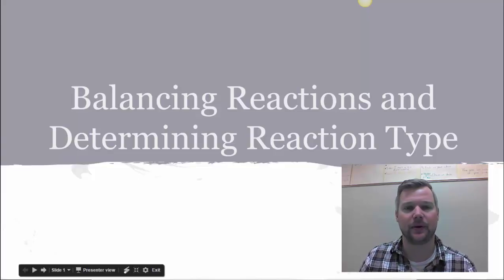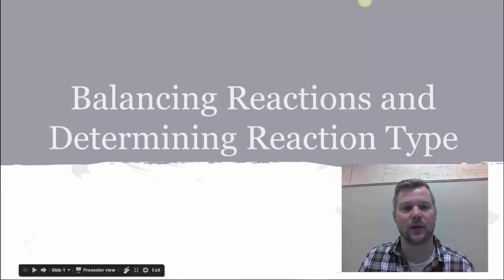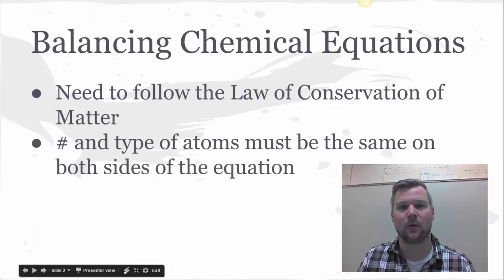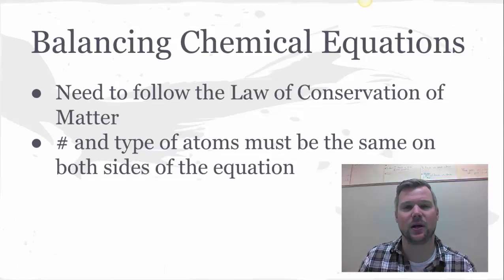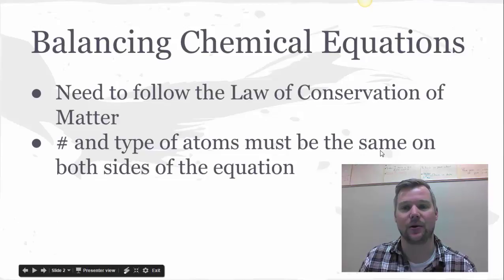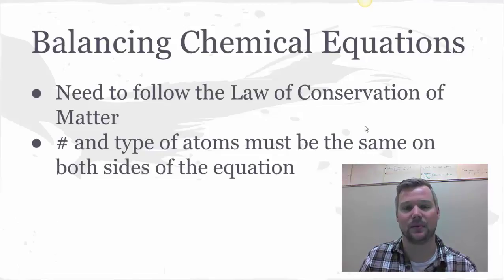Hi there, we're going to talk about balancing reactions and determining reaction type in today's quick video. Balancing chemical equations needs to be done in order to follow the law of conservation of mass or law of conservation of matter. We need to make sure that the number and type of atoms on both sides of our arrow are the same.